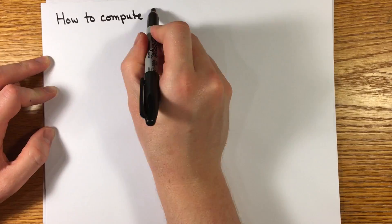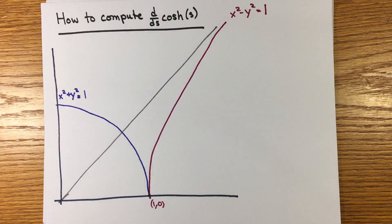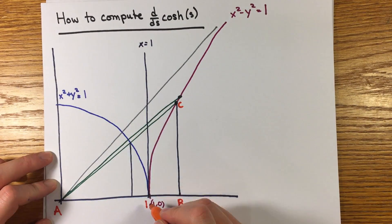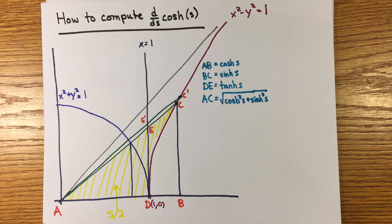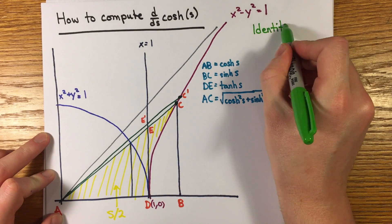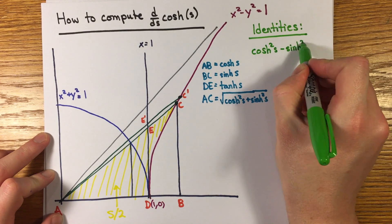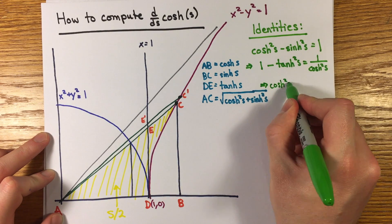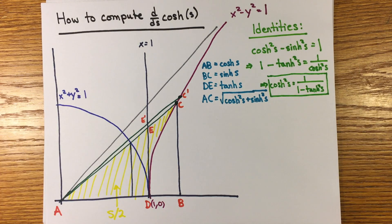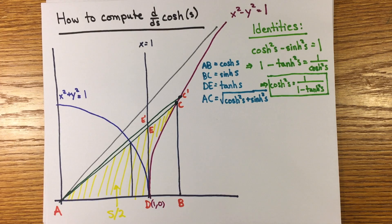Now we want to compute the derivative of cosh of s. Let me draw the diagram again and make another ray to add a small piece of area ds over two. At this point, we need some simple identities. If we take the defining relation cosh squared minus sinh squared equals one and divide by cosh squared, we get one minus tanh squared equals one over cosh squared, or cosh squared equals one over one minus tanh squared.